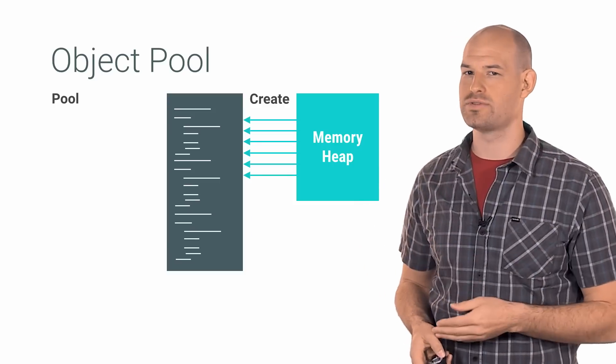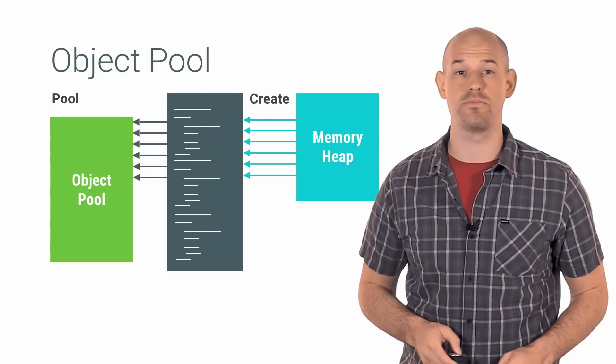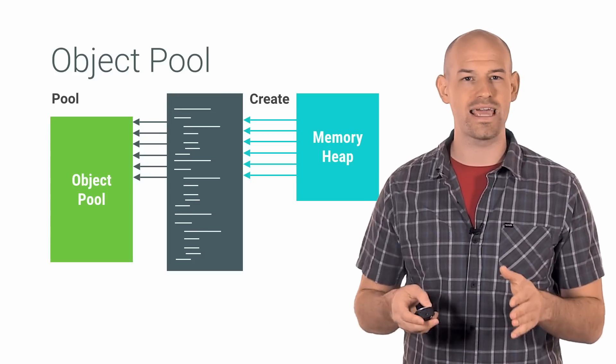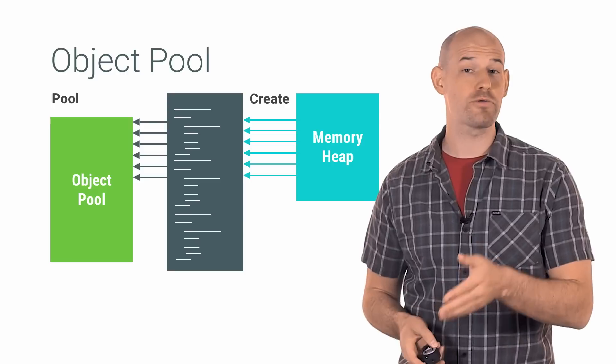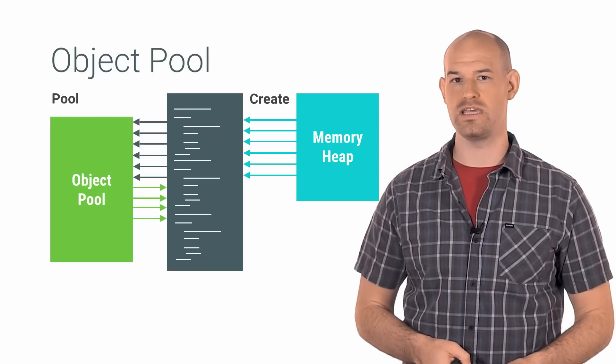Effectively, when you're done with an object, rather than freeing it back to the memory heap, you keep a reference to it in a list of available objects. The next time you need to allocate an object of that type, you can repurpose an existing object from the pool rather than grabbing a brand new one from the memory heap.